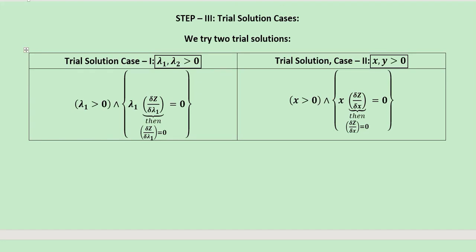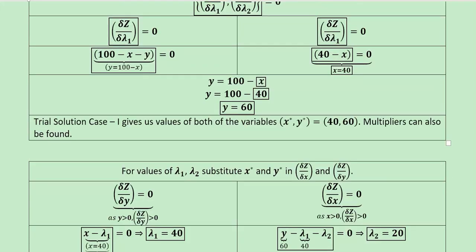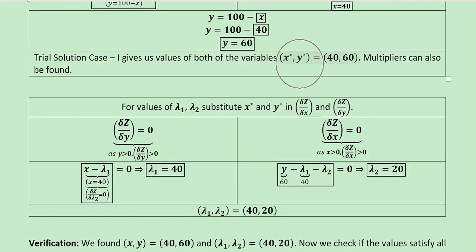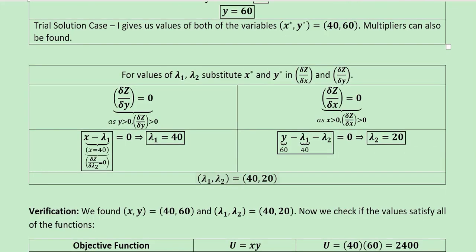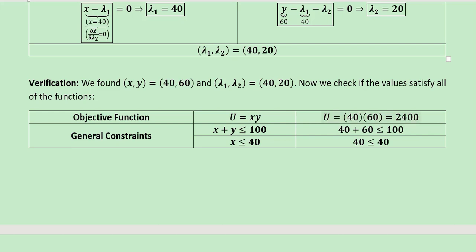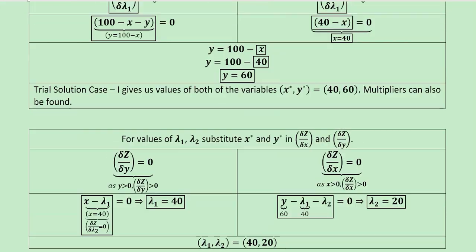Step 3 involves the trial solution cases and the various steps you need to undertake. We have found the optimum values of x and y and also the optimum values of the multipliers. By using these we can verify the objective function and the constraint functions and we can see that they are being verified. Once all the constraints and the objective function are verified with the critical values, we can be sure that all of these values are true — the verification is done and the final question is solved.